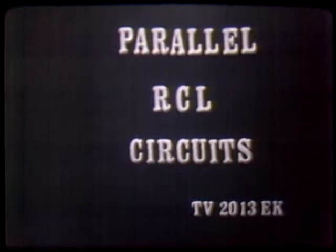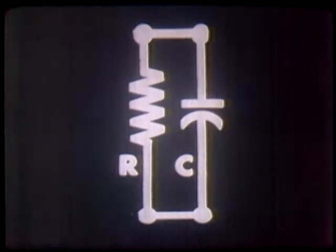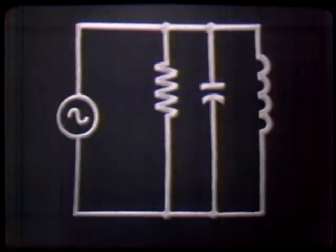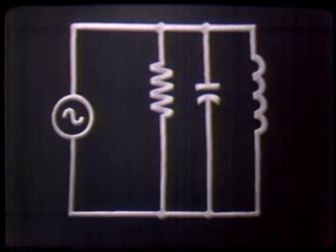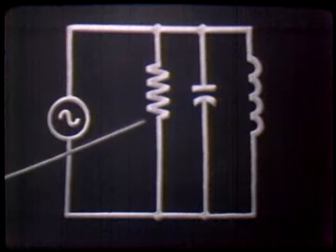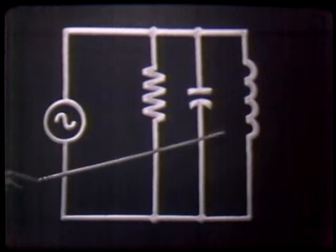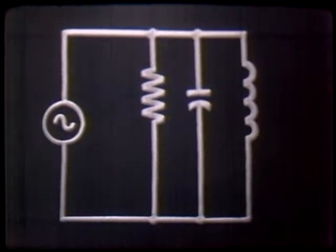Parallel RCL circuits. As the title implies, we could take a resistor, a capacitor, and an inductor and place them in parallel across a voltage source. Here we have a parallel RCL circuit. Following the rules for any parallel circuit, we know that the voltage across each component is the same as the source voltage. The resistor voltage, the capacitor voltage, and the inductor voltage would all be the same as the source voltage.